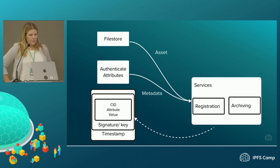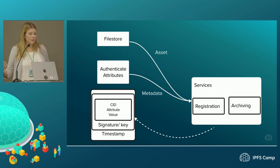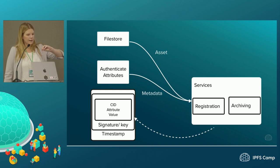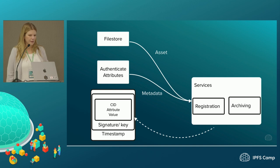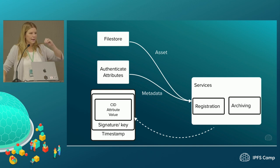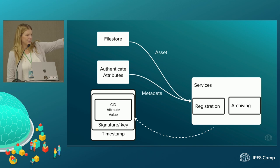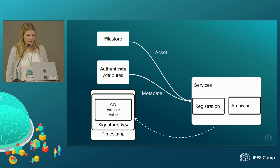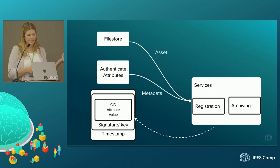Then the Starling integrity backend, when it needs to do something — which we'll see with the CLI tool demo in a little bit — can pull the asset from the file store if needed and pull the data from authenticated attributes. We can do a registration on chain and then go back and add that to authenticated attributes as another attribute. We could pull the asset and the metadata and archive it, and then log that as another attribute, timestamped and signed, to our authenticated attributes database.